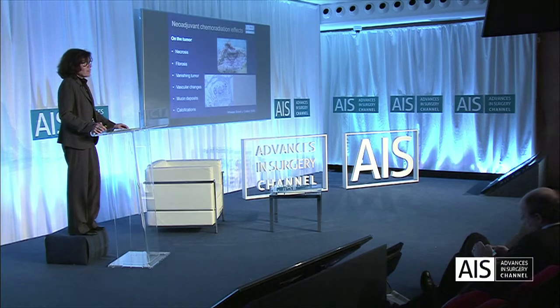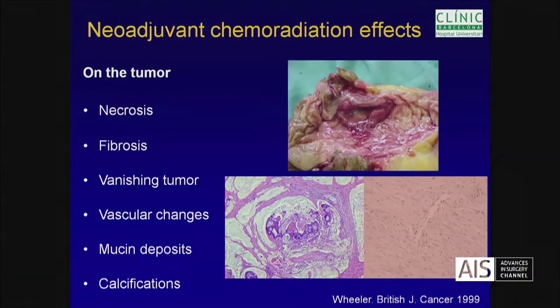Chemo-radiation effects affect the tumor and cause necrosis. We can see here this tumor with necrosis in the middle. Sometimes we only see fibrosis. And when we see the tumor, we see a vanishing tumor with many vascular changes, mucin deposits, and some calcifications.